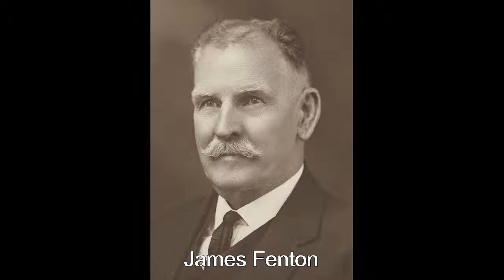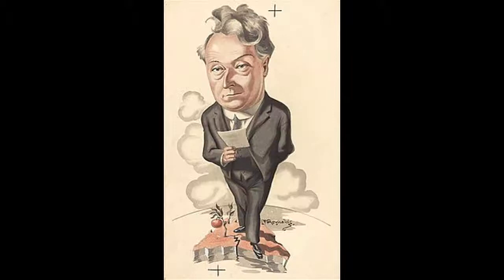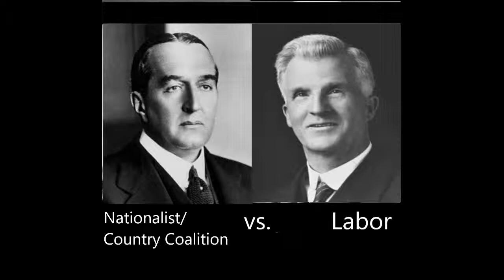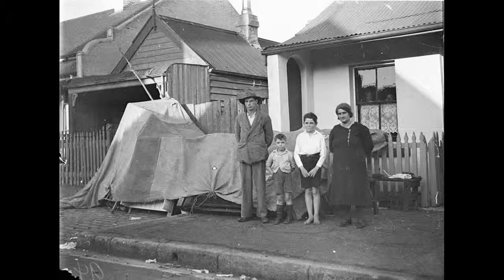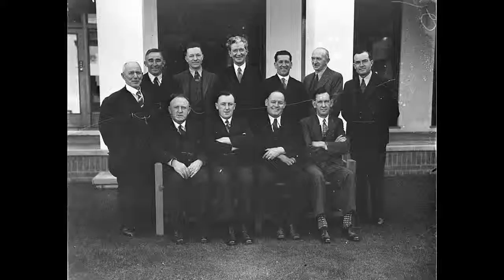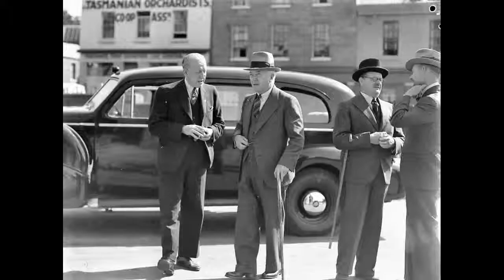Lyons was a new face on the federal political scene, having served previously as the Premier of Tasmania. He had just entered Canberra in the 1929 election. Unlike Scullin, Lyons supported more orthodox economic practices and was not opposed to the idea of welfare cuts to balance the budget. This made him several enemies in the Labour Party, but gained him many friends in the business sector, who began to convince him to leave the Labour Party and join the Conservative opposition.